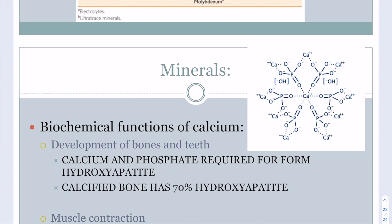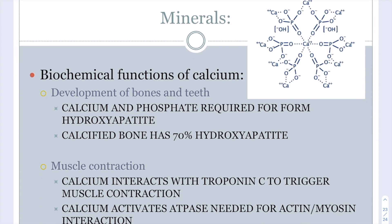Calcium has important biochemical functions in bones and teeth as well as in muscle contraction. Calcium and phosphate combine to make hydroxyapatite, which makes up about 70% of calcified bone. Muscle contractions depend on calcium — calcium interacts with troponin protein, and muscle contractions also require activation of ATPases to help drive actin-myosin interactions.